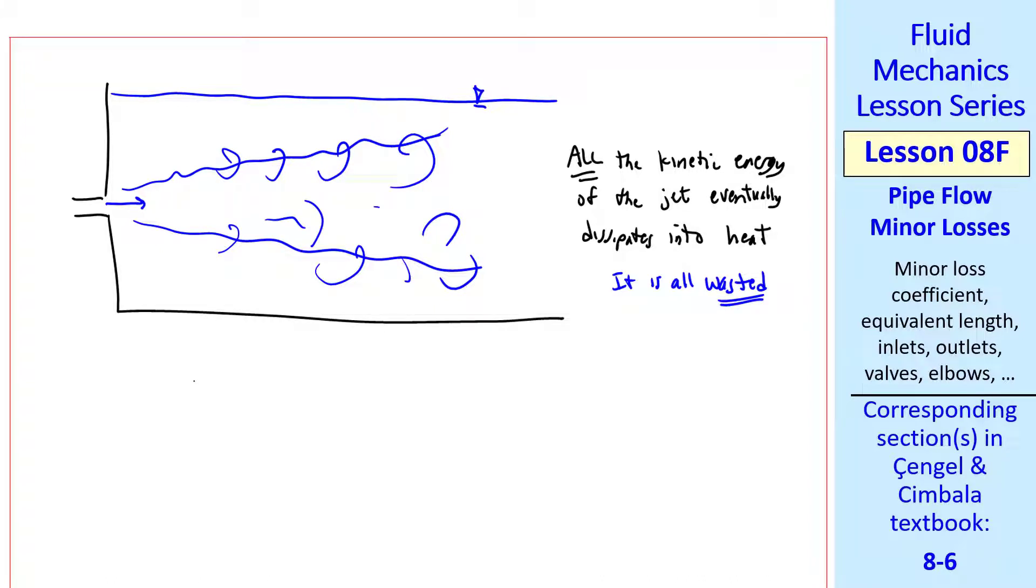How much of it is wasted? In our energy equation, recall that this is the kinetic energy term expressed as a head, and we have a kinetic energy correction factor alpha. All of this energy is wasted.